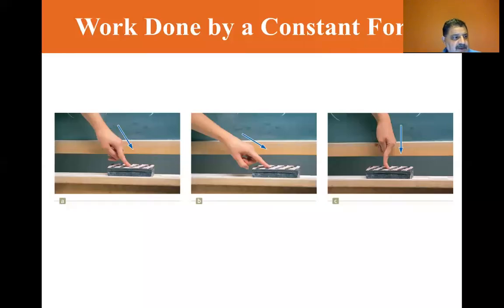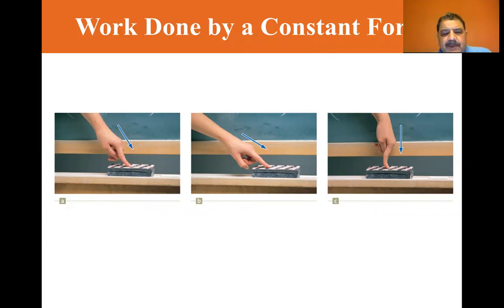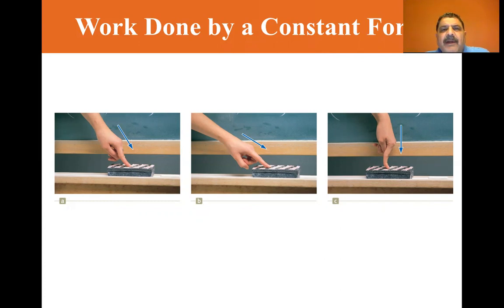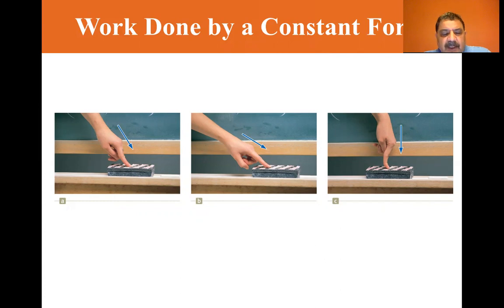We're starting section 7.2: Work done by a constant force. Now there are many mechanisms by which a system can be influenced by its environment, and the first one we're going to look at is work. We use the word work every day, but the physics meaning of the word work is very different than the everyday meaning.